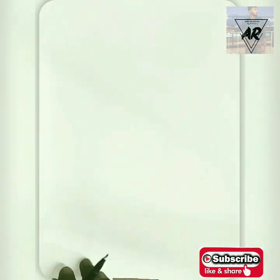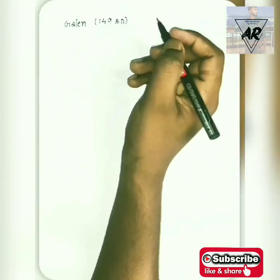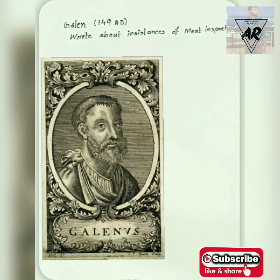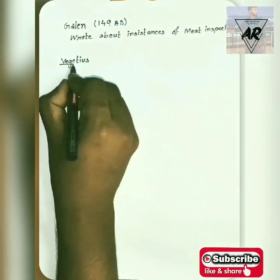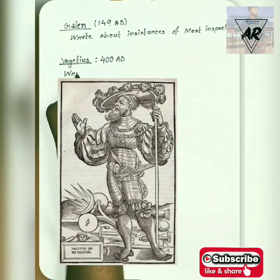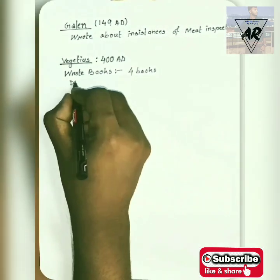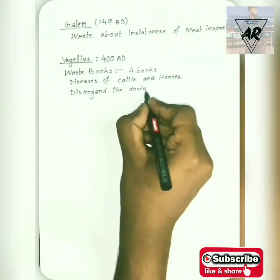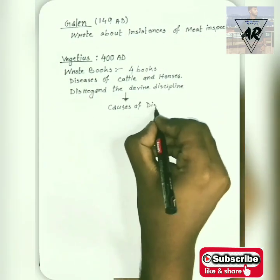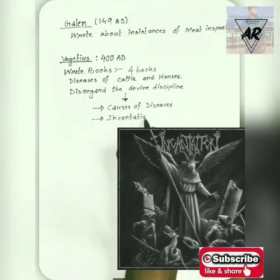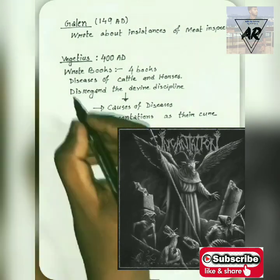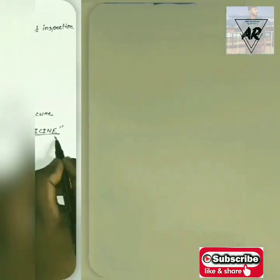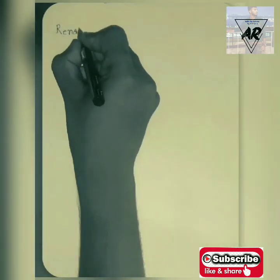From this ancient history, it is seen that veterinary medicine had its own beginnings with the ancients. Moving forward in the timeline, we reach the period of Galen, who wrote about the importance of meat inspection. Then came Vegetius, around 480 AD, author of four books on diseases of horses and cattle, in which he urged disregard of divine discipline as the cause of disease and incantations as their cure. Vegetius is generally considered the father of veterinary medicine.